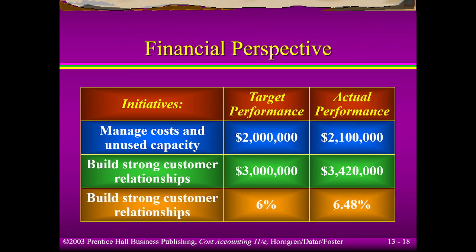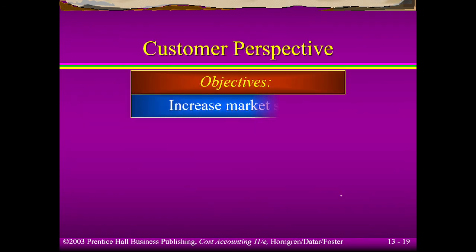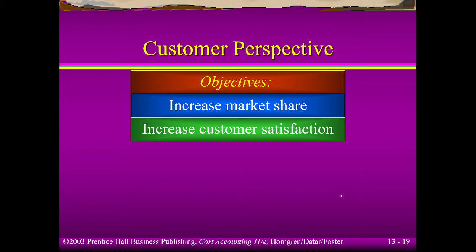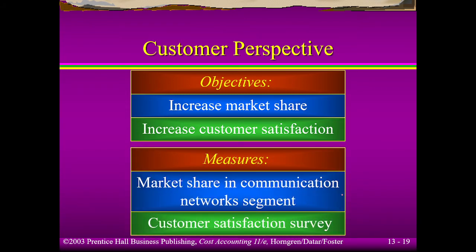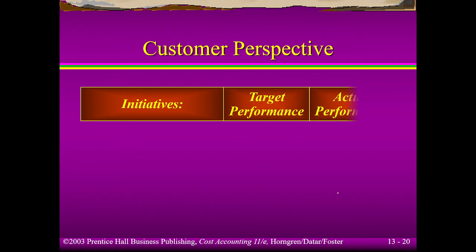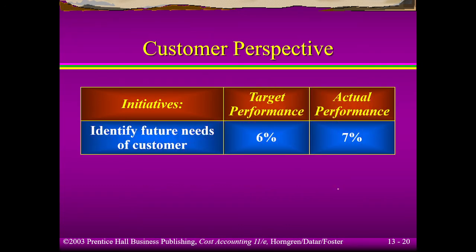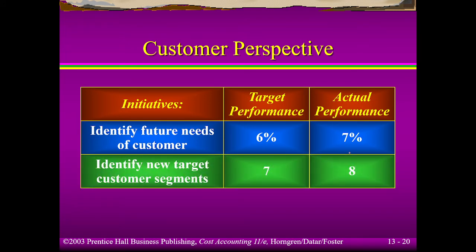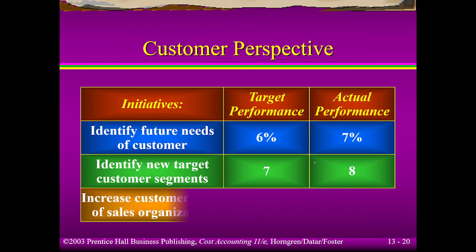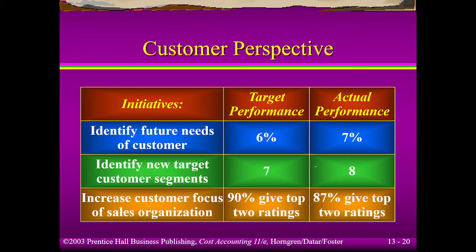You just compute the ratio. For the customer perspective, we need to increase market share and customer satisfaction. The indicators include surveys and your communication network segment. You assess by looking at target versus actual. The figures given here are just samples. We are given the performance indicators, future needs, and target customer segment based on the survey. Look at the increased customer focus of sales.